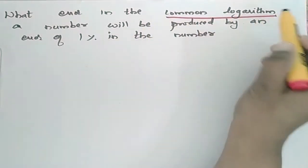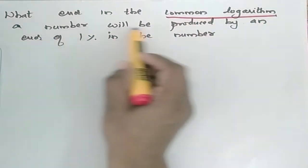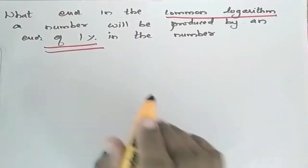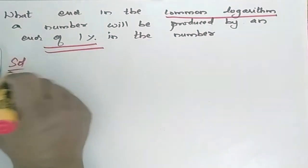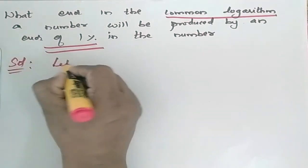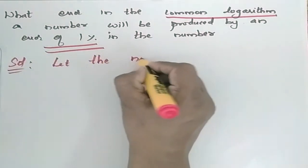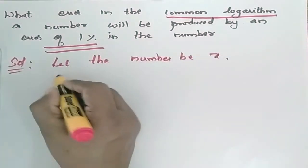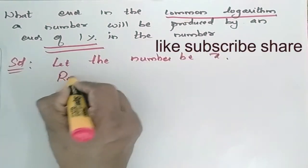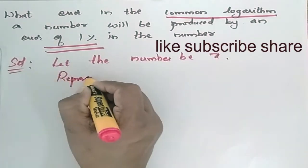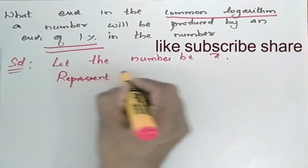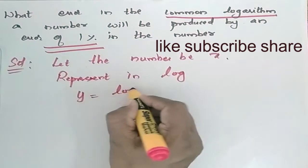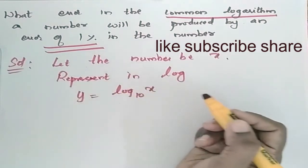What error in the common logarithm of a number will be produced by an error of 1 percentage in the number? Solution: Let the number be x. Represent the number in logarithm. So, y is equal to log x to the base 10.